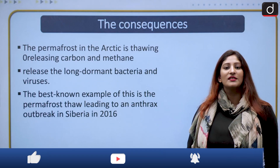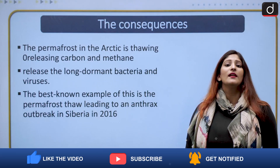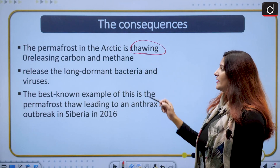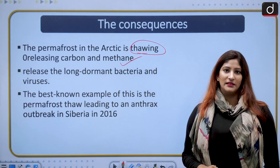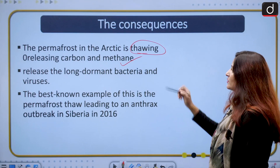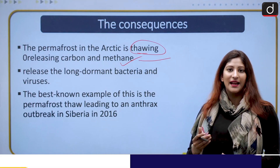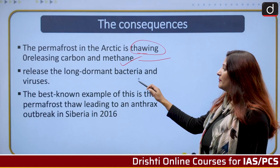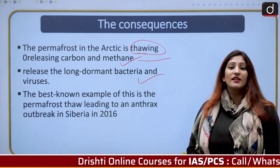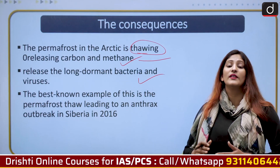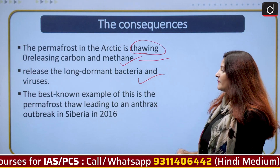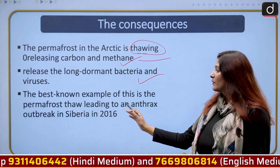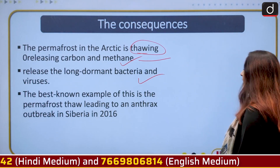The permafrost — thick ice said to have been frozen for billions of years — is thawing in the Arctic, increasing the release of carbon and methane, two very potent greenhouse gases. This further increases global warming, creating a vicious cycle causing more glacial melt. The thawing permafrost may also release long-dormant bacteria and viruses, potentially leading to never-before-seen diseases. Anthrax occurred in Siberia in 2016, killing thousands of reindeer as a result of permafrost thawing.